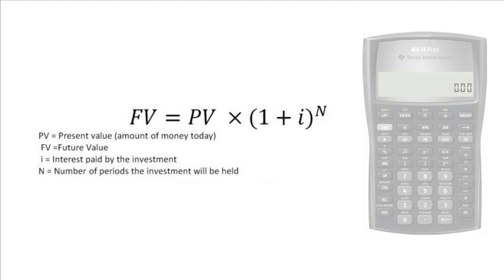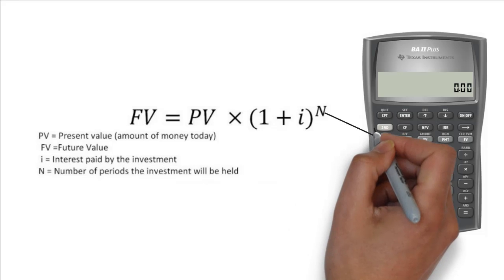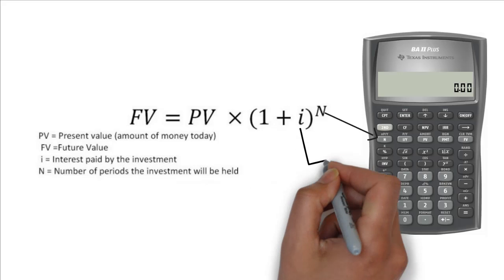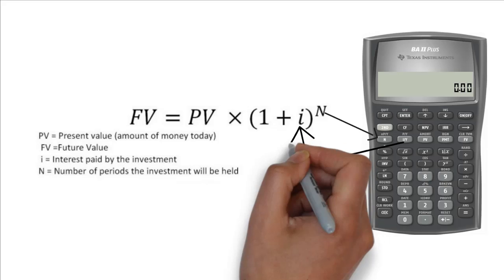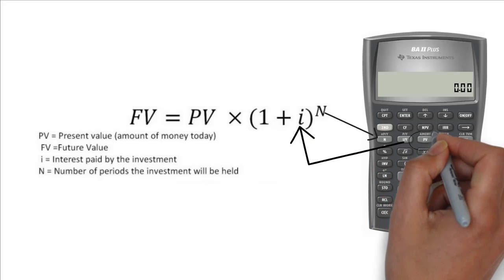You can locate each of the variables of this formula in a financial calculator. For instance, n is the number of years that matches with the formula. i over y is the i in the formula. PV is the present value in the formula.